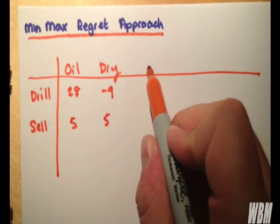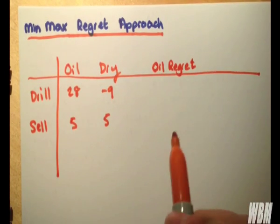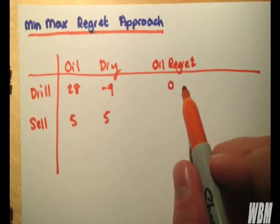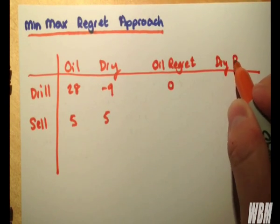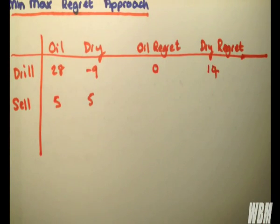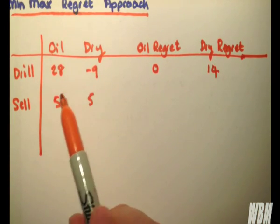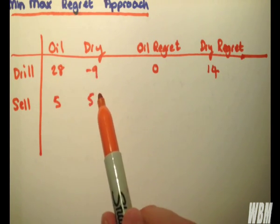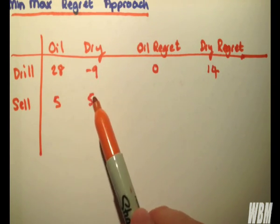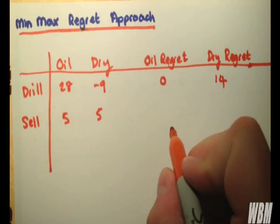So what's our oil regret? Well, our oil regret, if we drill and it's oily, is zero. However, if we drill and it's dry, our dry regret is equal to 14. Because if we take the original land, the difference between selling it and drilling and finding out that you haven't actually got any oil is worth 14 million, because the original land value would have been 5.